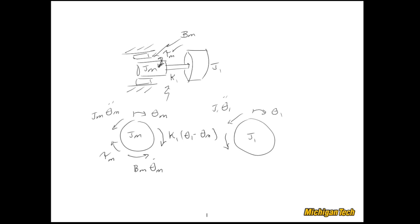We can do a quick sanity check by imagining that theta_m equals zero — so not only is it small, it's super small — and theta1 is a large positive displacement. In that case, this torque is going to be pulling theta_m around in the positive direction, and it's going to be exerting a resistive moment on J1. That makes sense.